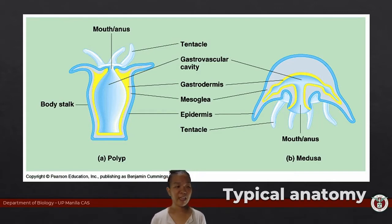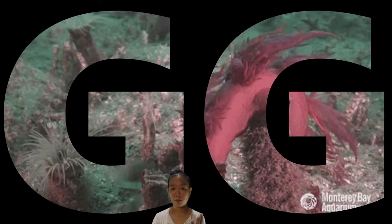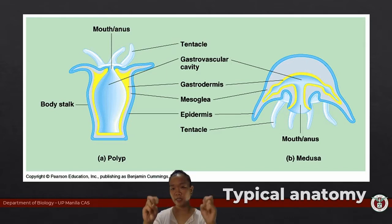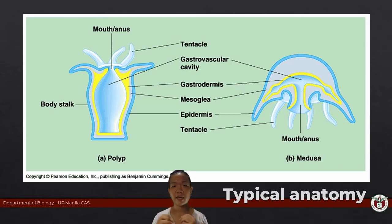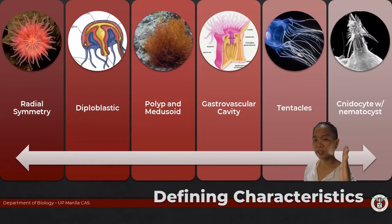The gastrovascular cavity is the main place where cnidarians liquefy and digest their food. It's called gastrovascular because it not only serves as their digestive system, but respiratory gases also get diffused through the channels of the gastrovascular system. It serves a dual purpose. And the name cnidarian itself comes from 'cnidae,' meaning nettle or stinging nettle.